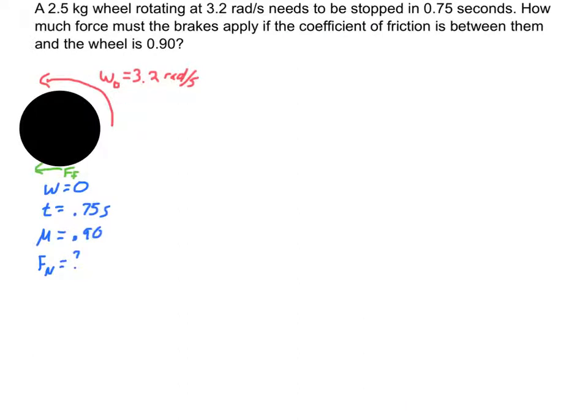Now we're going to work a problem that's very similar to a problem that we worked back whenever we started this rotational unit. We have a 2.5-kilogram wheel rotating at 3.2 radians per second, and we need to stop it in 0.75 seconds. How much force must the brakes apply if the coefficient of friction between them is 0.90? So whenever you see how much force must the brakes apply, and we're dealing with friction is the way the brakes are going to stop it, that's asking what normal force must be exerted here.